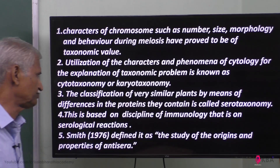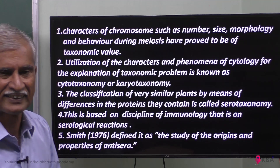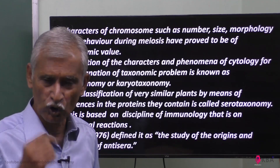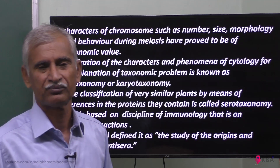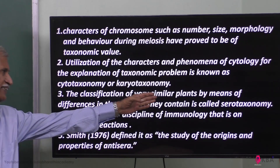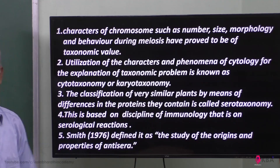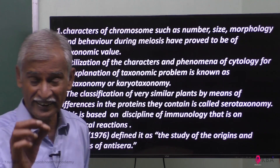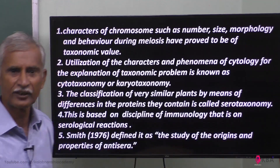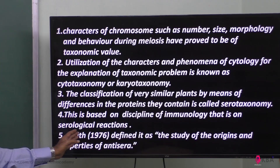The next type of classification is Serotaxonomy. In this method, the serum of plants and animals is used — specifically the protein content in body fluids. Classification of very similar plants by means of differences in their proteins: plants may look similar but if their protein content differs, they can be classified using serotaxonomy. This is based on the discipline of immunology, that is, serological reactions.